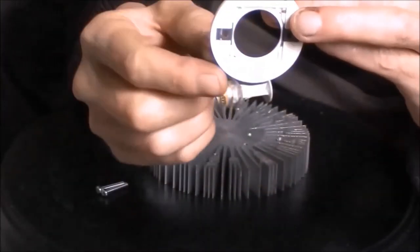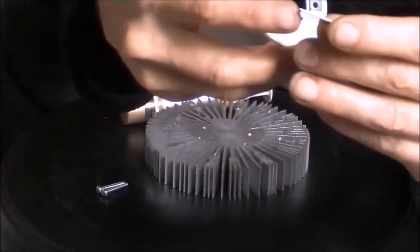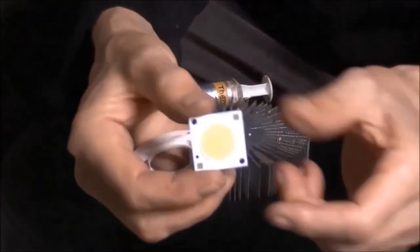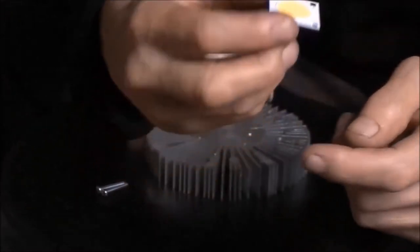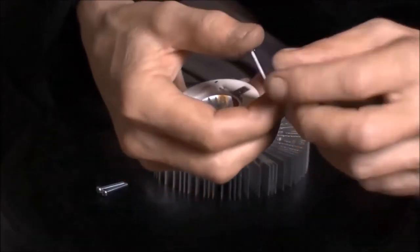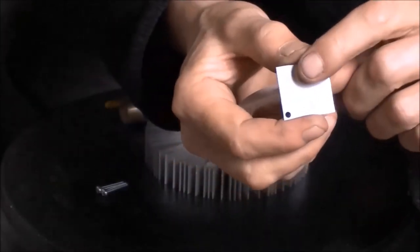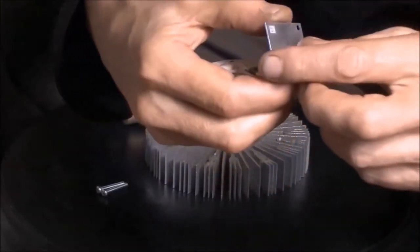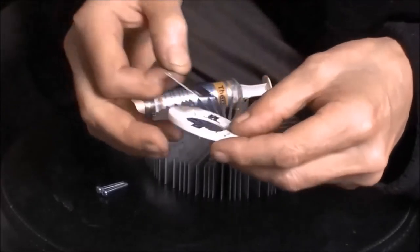And the COB faces are also marked for positive and negative, but also just for idiot proofing, you'll notice on the COB holder there's a little black square, and there's a little square marking on the back of the COB too. Line the two squares up, click them together.